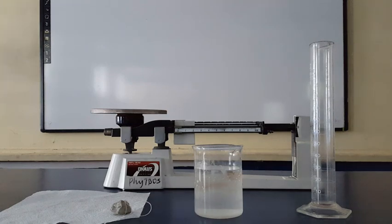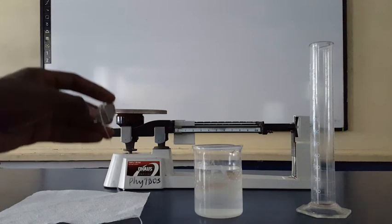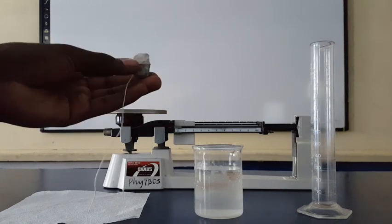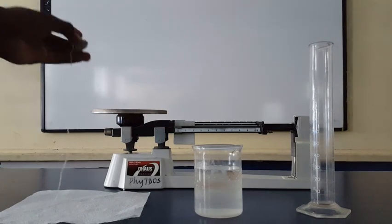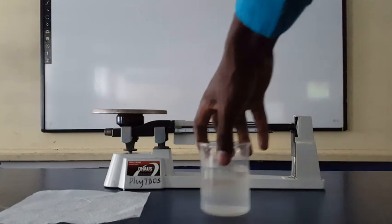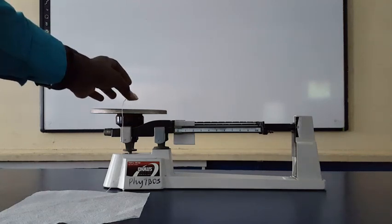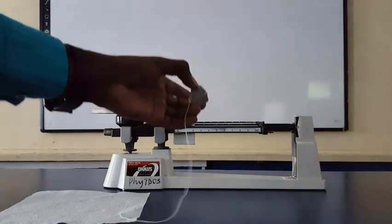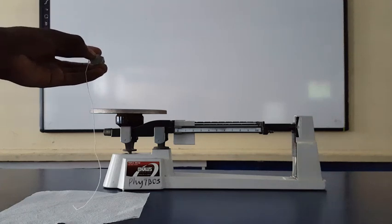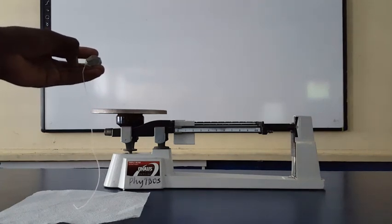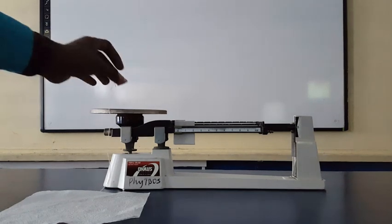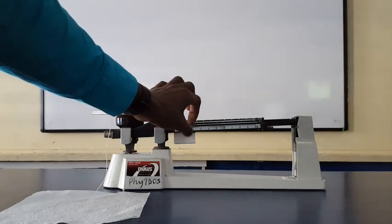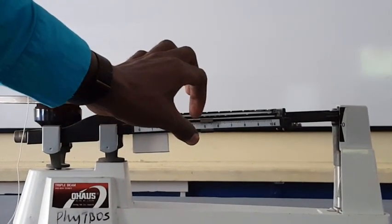The first thing I will do is measure the mass of the stone. I already tied the stone to the string, but I'm going to assume the mass of the string is negligible, so it won't affect my reading. Notice that the triple beam balance is zeroed. I did a previous video showing how to use the triple beam balance if you need a tutorial. I place my object on the balance and start to adjust the beams until I get it balanced.